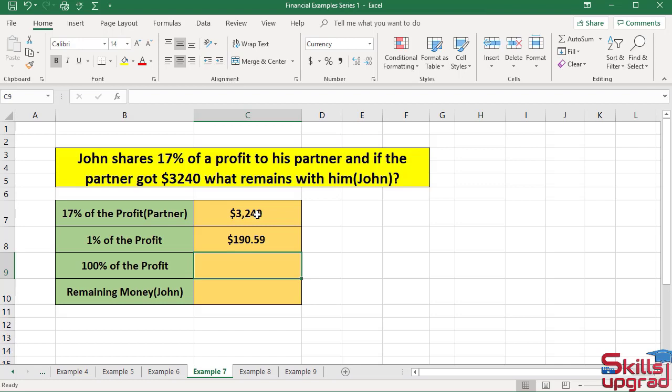To calculate 100% of the profit or John's total profit, multiply 100 by 1% of the profit amount. Activate cell reference C9, enter equal sign, type 100, enter multiplication operator, click this cell reference, and press Enter.